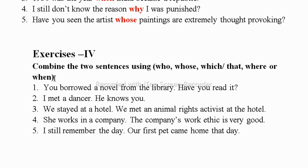The fourth exercise: combine the two sentences using who, whose, which, that, where or when. You need to use the most suitable word — you cannot take any word arbitrarily. First example: You borrowed a novel from the library. Have you read it? We are talking about a non-living thing — the novel — so we use 'which you borrowed from the library'.